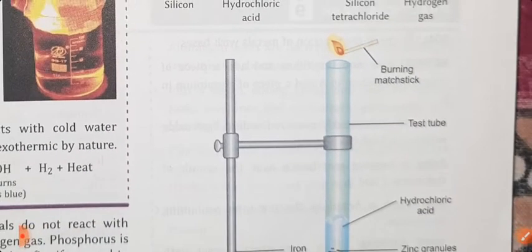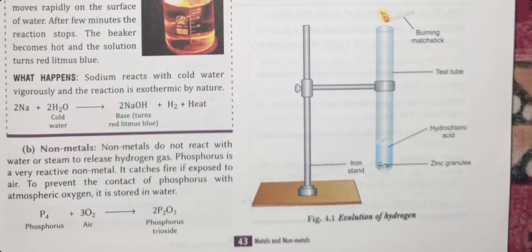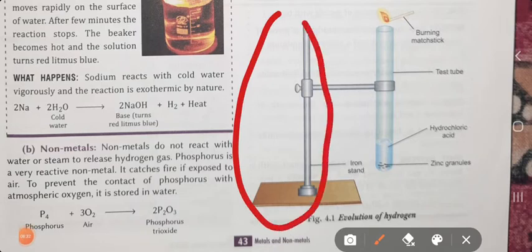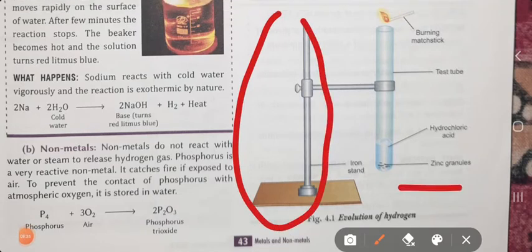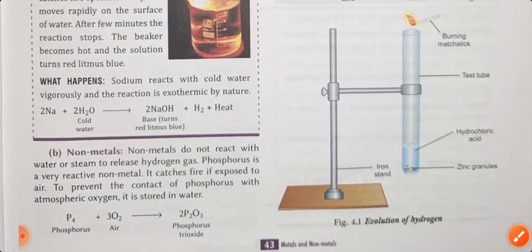यहाँ पर image में आप देख सकते हैं - evolution of hydrogen का example show किया हुआ है। एक test tube है, iron का stand है। Test tube में zinc granules और hydrochloric acid का reaction है। फिर burning match stick लेके जाते हैं तो एक pop sound create होता है, जिससे पता चलता है कि hydrogen gas बन रही है। Now open page number 44.